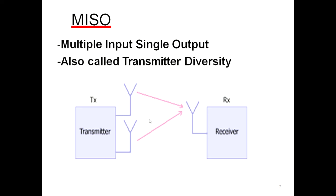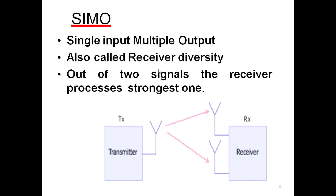The multiple versions of the transmitter signal travel via multiple paths and are collectively captured by the single antenna at the receiver. This is the meaning of MISO, and it can also be called transmitter diversity.